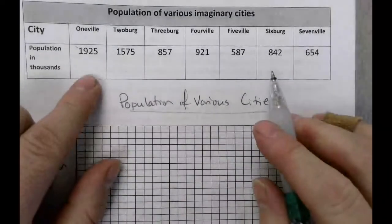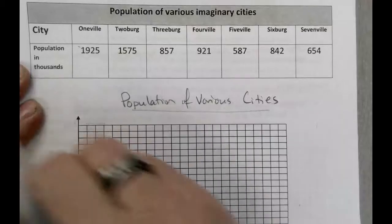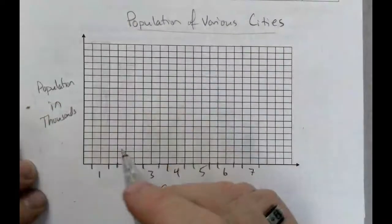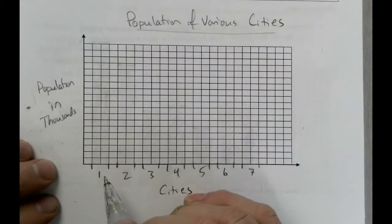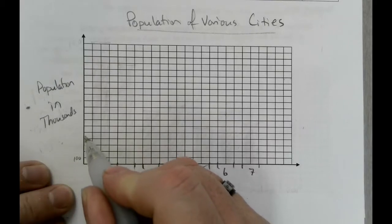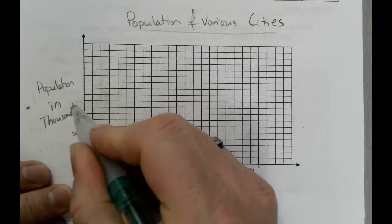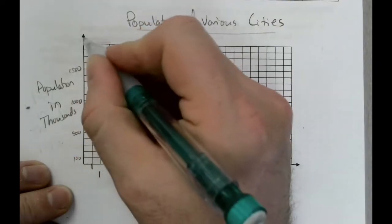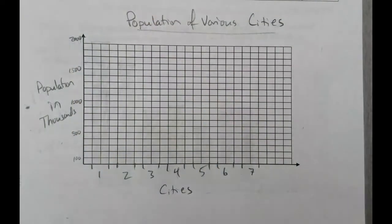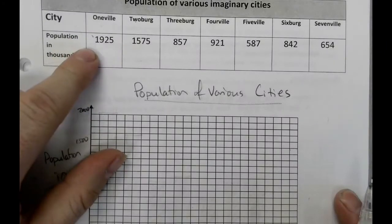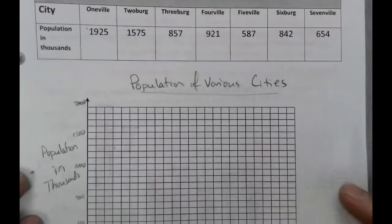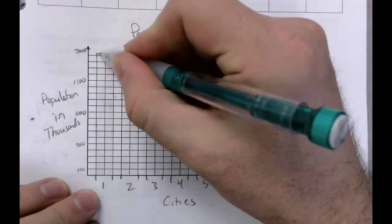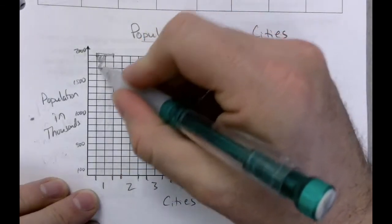The data is in the thousands, so this is population in the thousands. I'm going to go up by hundreds: 100, 200, 300, 400, 500, 600, 700, 800, 900, 1000. Then 1,500, and up here is going to be 2,000. Now, One-ville has a population of 1,925,000 — that's about 1.9 million — which puts my bar all the way up just a little bit beyond the top. If I'd been more careful, I'd have chosen a different scale.